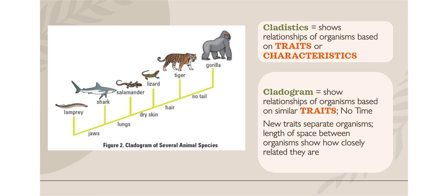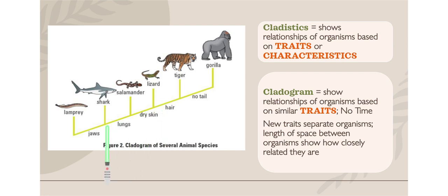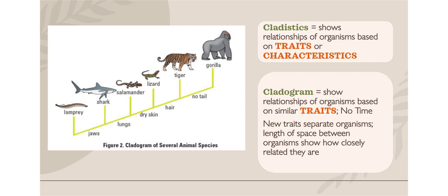Cladistics shows relationships based on traits or characteristics only — importantly, there is no time element in a cladogram. A cladogram separates species so that the closer they are on the line, the more closely related they are. Cladograms list characteristics such as jaws, lungs, and dry skin. Where a trait first appears, everything after it on the diagram has that trait. For example, a lamprey does not have jaws, but all other organisms shown do. A shark does not have lungs, but all others do. The more traits in common, the more closely related.